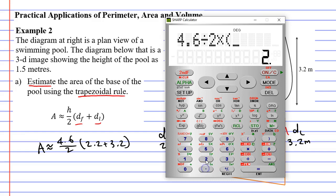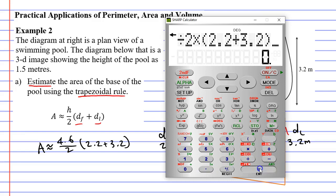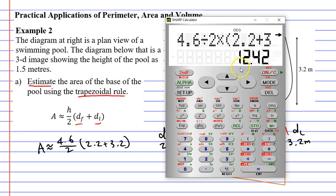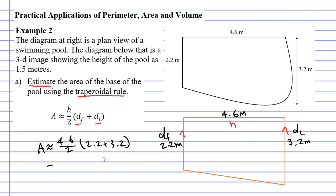We enter 4.6 divided by 2, multiplied by open bracket 2.2 plus 3.2, close bracket, equals, and we get 12.42. So the area of the base of the pool is approximately 12.42 metres squared.